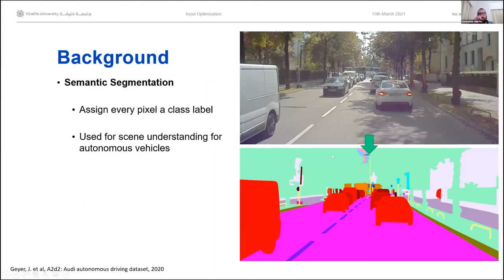We had a talk earlier that covered semantic segmentation, so just a bit of context. Semantic segmentation is a computer vision task where you are trying to find a class label for every pixel in a scene. In this case, this is a scene from a car driving on a road, and in the resulting segmentation, vehicles are highlighted in red, the road is pink, trees and grass are green. This is very commonly used for scene understanding and navigation of autonomous systems such as autonomous vehicles.